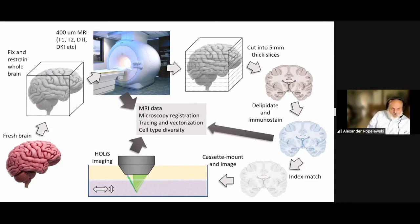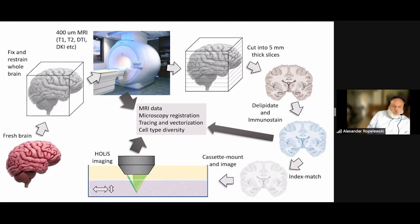Whole brains are going to be essentially fixed and restrained, and then run through to produce MRI data. Once the MRI is produced, that brain will be cut into five millimeter thick slices, go through a variety of staining and clearing processes, and then be imaged by this unique light sheet-based microscope that has been developed.